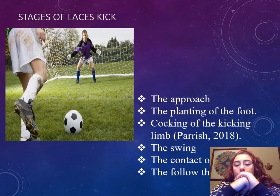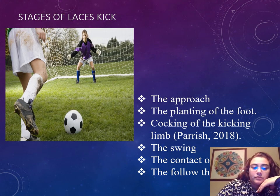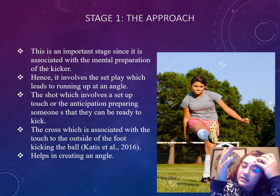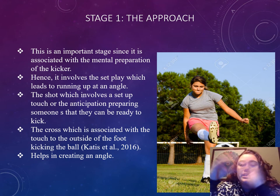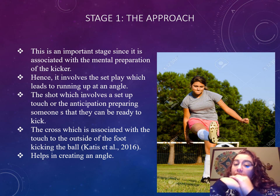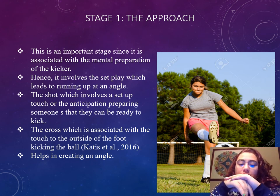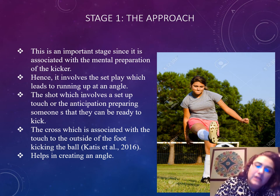The stages are: the approach, the planting of the foot, cocking of the kicking limb — your left or right leg — the swing, contact of the ball, and follow through. Stage one is the approach. This stage is important since it's associated with the mental preparation for the kicker, which involves the set play leading to the running up at an angle. The shot involves a set-up touch or anticipation preparing someone so they can be ready to kick. The cross is associated with a touch to the outside of the foot, kicking the ball to help create an angle.